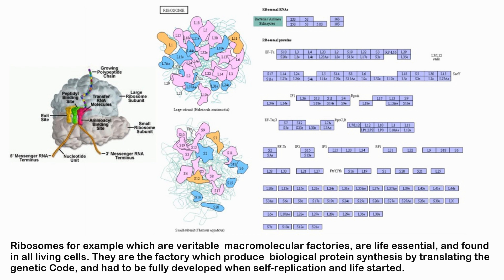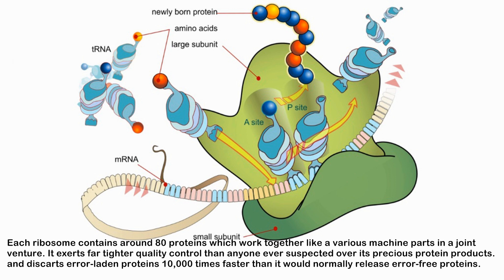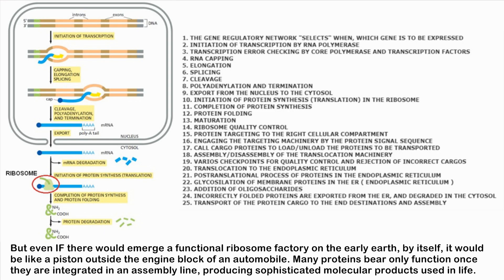Ribosomes — veritable macromolecular factories — are life-essential and found in all living cells. They are the factory which produces biological protein synthesis by translating the genetic code, and had to be fully developed when self-replicating life started. Each ribosome contains around 80 proteins working together like machine parts. It exerts far tighter quality control than anyone ever suspected over its protein products, discarding error-laden proteins 10,000 times faster than it would normally release error-free proteins.